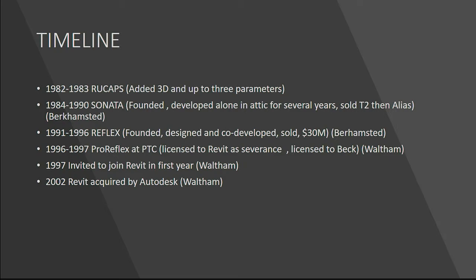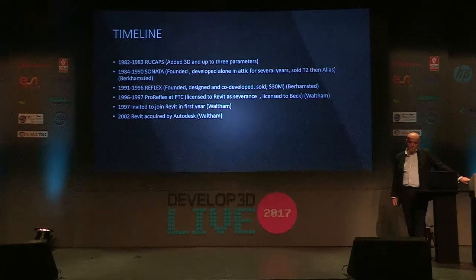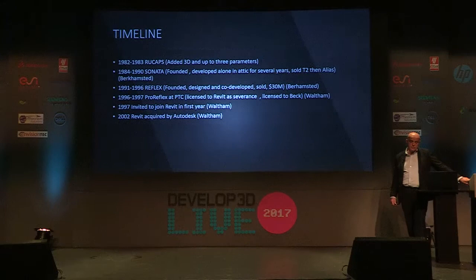So the timeline was: 1982-83 RUCUPS, which was a 2D system; I added the 3D to that, but it was still very much non-BIM. Then Sonata, Reflex, ProReflex of PTC, and then Revit took those technologies. A different license went to Beck, a US firm. And Revit was acquired by Autodesk, and the rest is history.